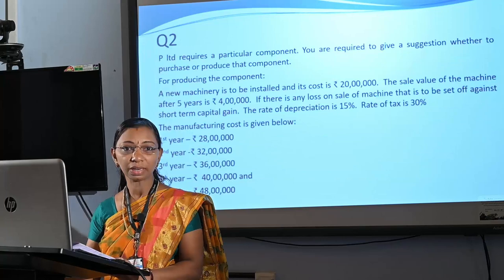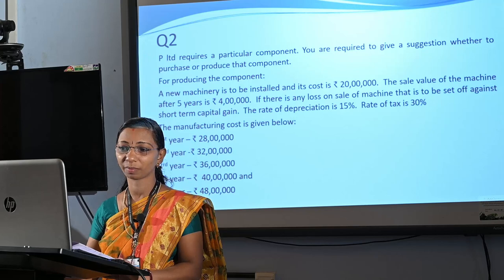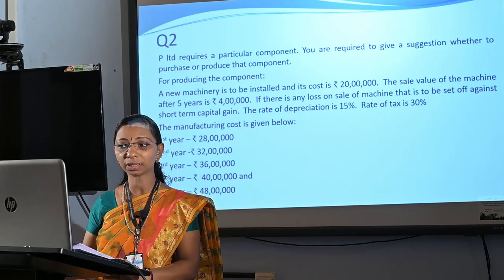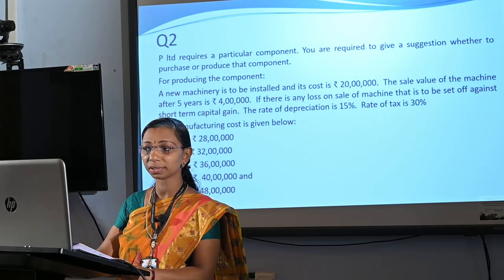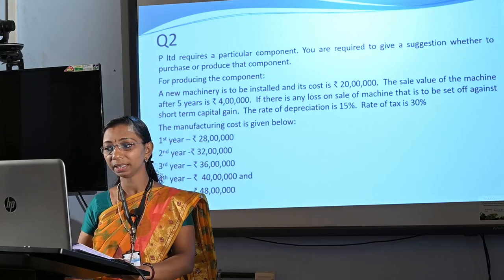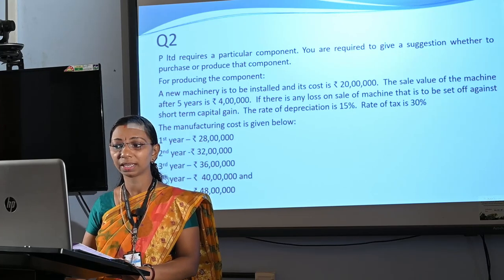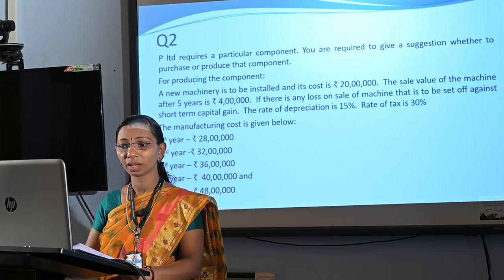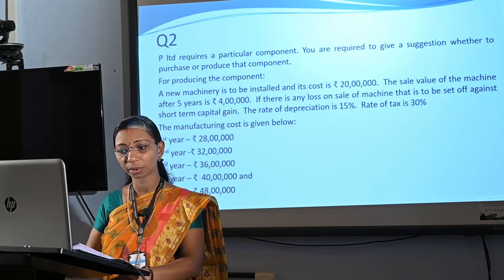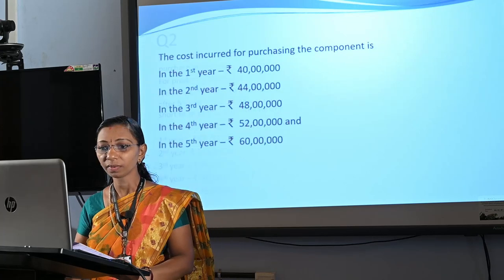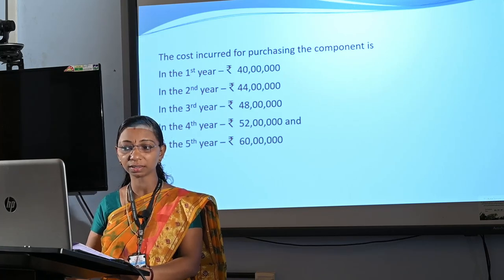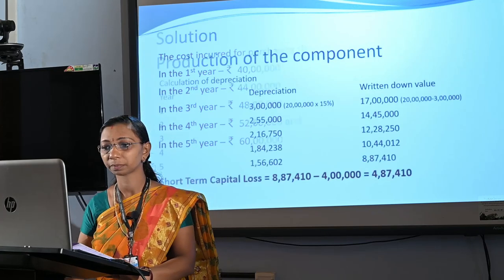Another question which also deals with make or buy decision. P Limited requires a particular component. You are required to give a suggestion whether to purchase or produce that component. For producing the component, a new machinery is to be installed and its cost is Rs. 20,00,000. The sale value of the machine after 5 years is Rs. 4,00,000. If there is any loss on sale of machine, that is to be set off against short-term capital gain. The rate of depreciation is 15% and the rate of tax is 30%. The manufacturing costs and purchasing costs over 5 years are also given in the question.